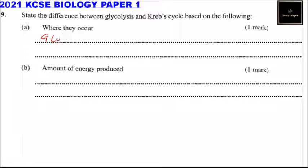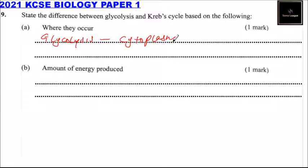Glycolysis occurs in the cytoplasm, while the Krebs cycle occurs in the mitochondria.